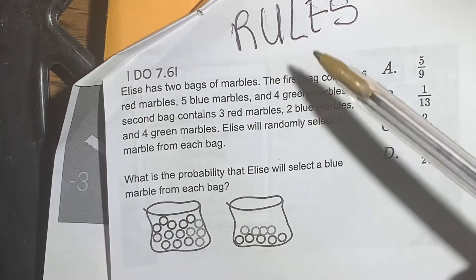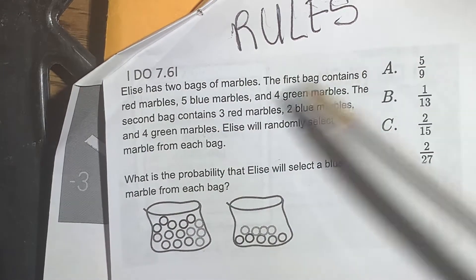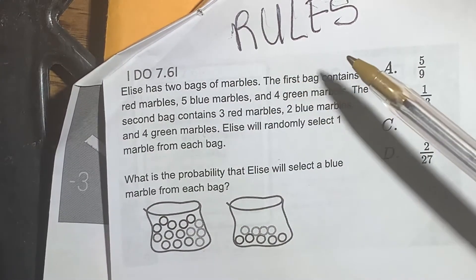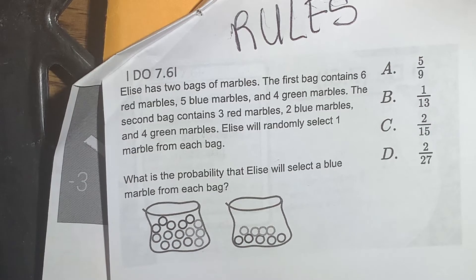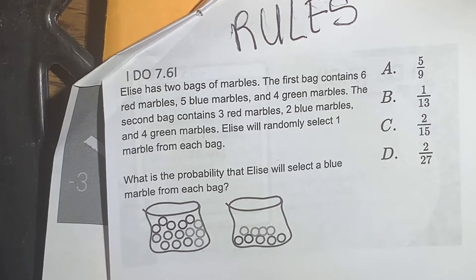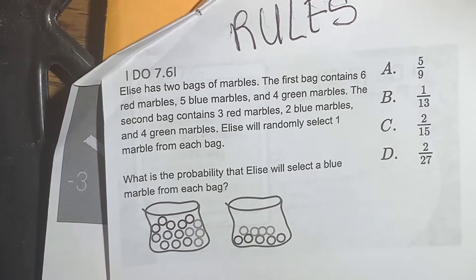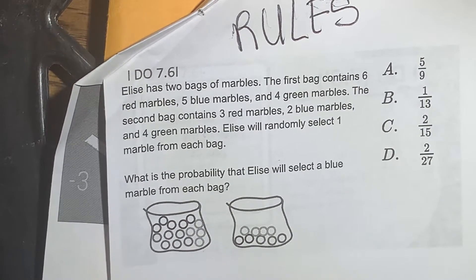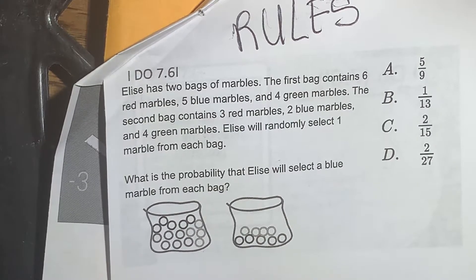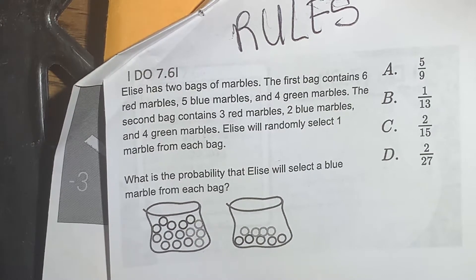Elise has two bags of marbles. The first bag contains six red marbles, five blue marbles, and four green marbles. The second bag contains three red marbles, two blue marbles, and four green marbles. Elise will randomly select one marble from each bag. What is the probability that Elise will select a blue marble from each bag? A: 5 ninths, B: 1 thirteenth, C: 2 fifteenths, or D: 2 twenty-sevenths.